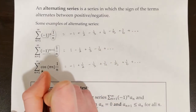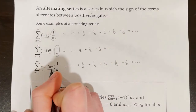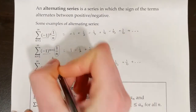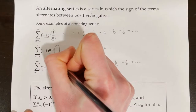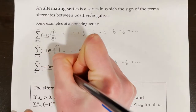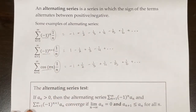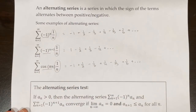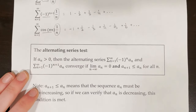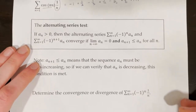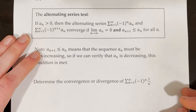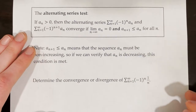So in this case, cosine of pi n is what makes our terms alternate, and 1 over n determines the magnitude of our terms. Now, in order to determine whether an alternating series converges or diverges, we can use what's called the alternating series test.